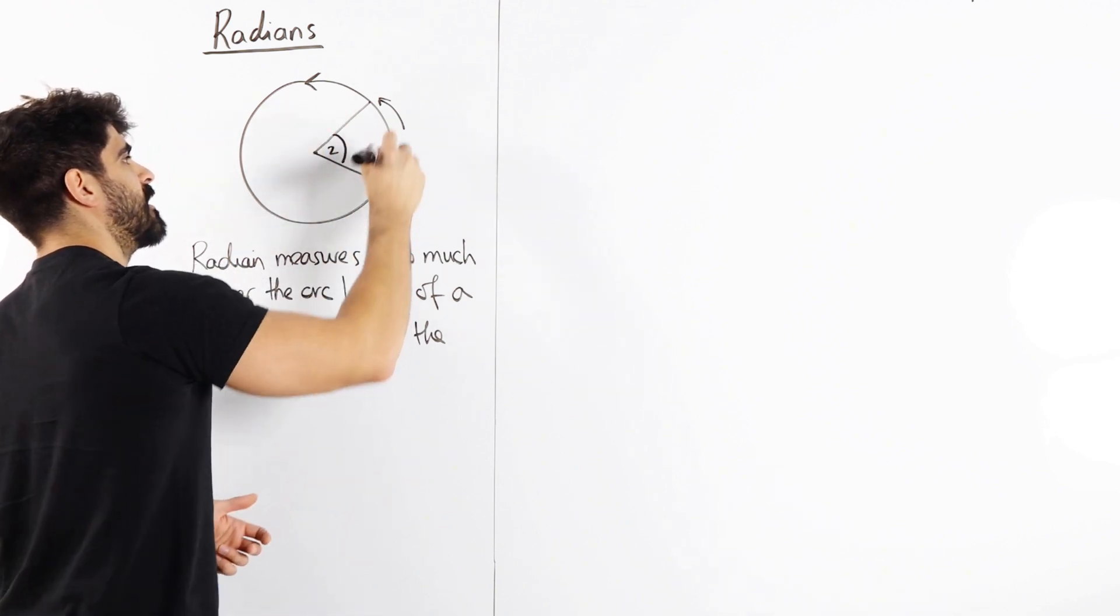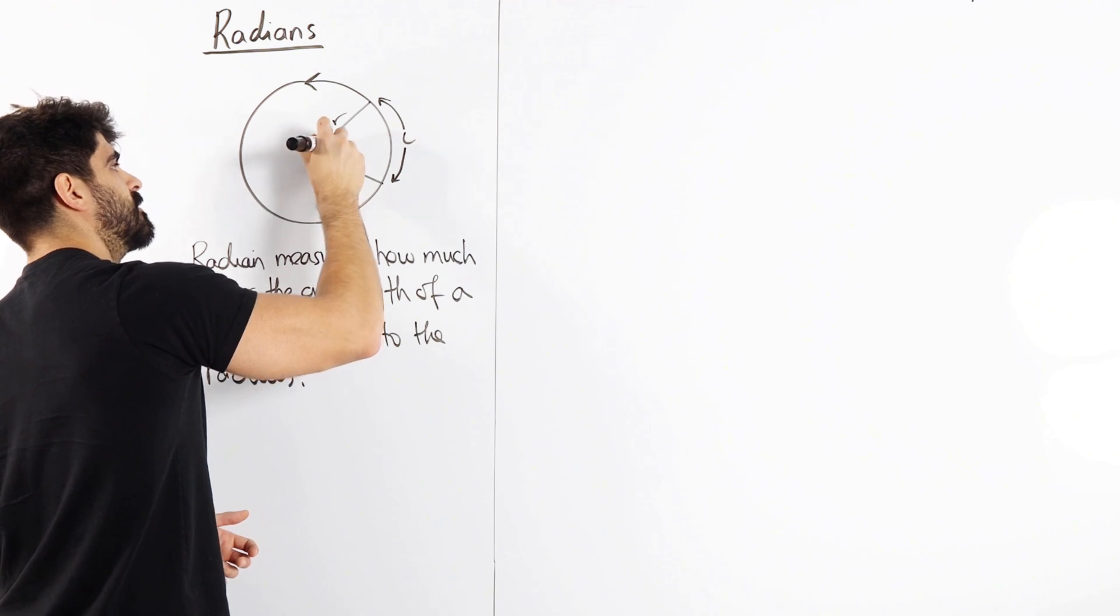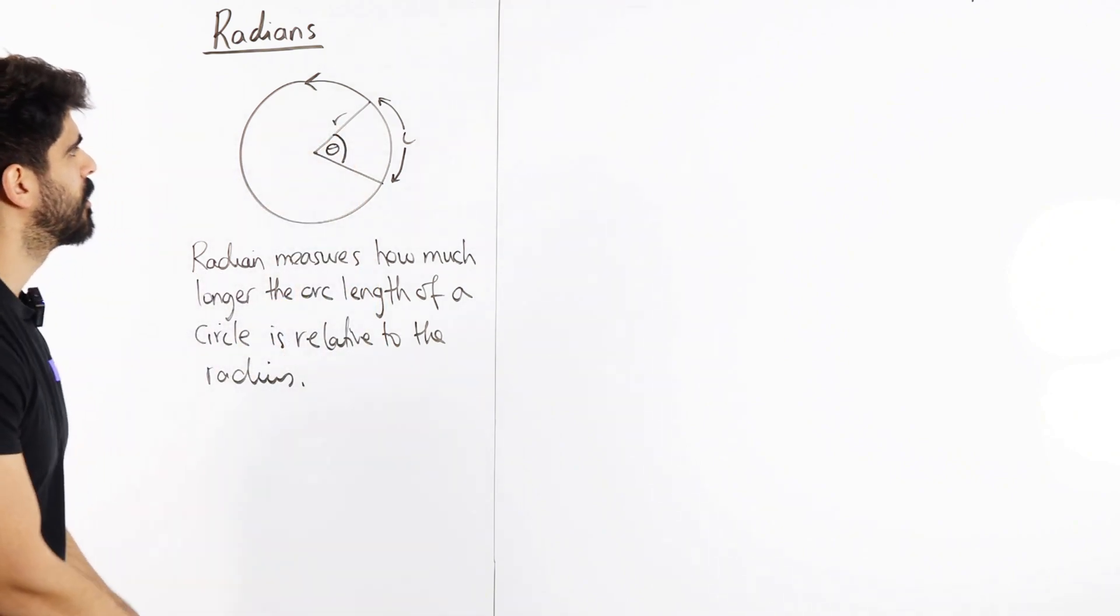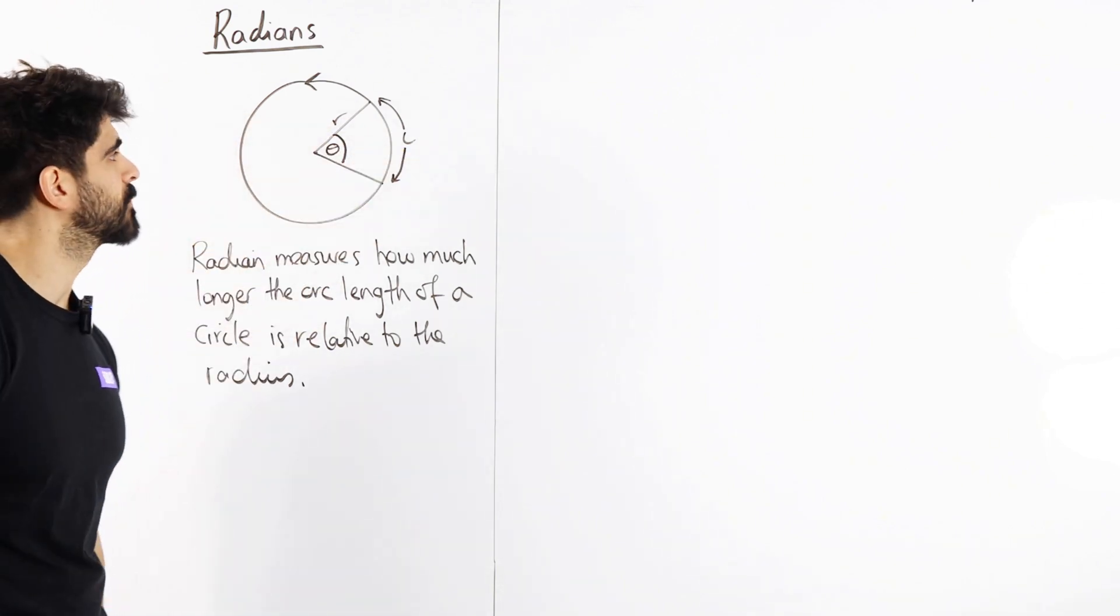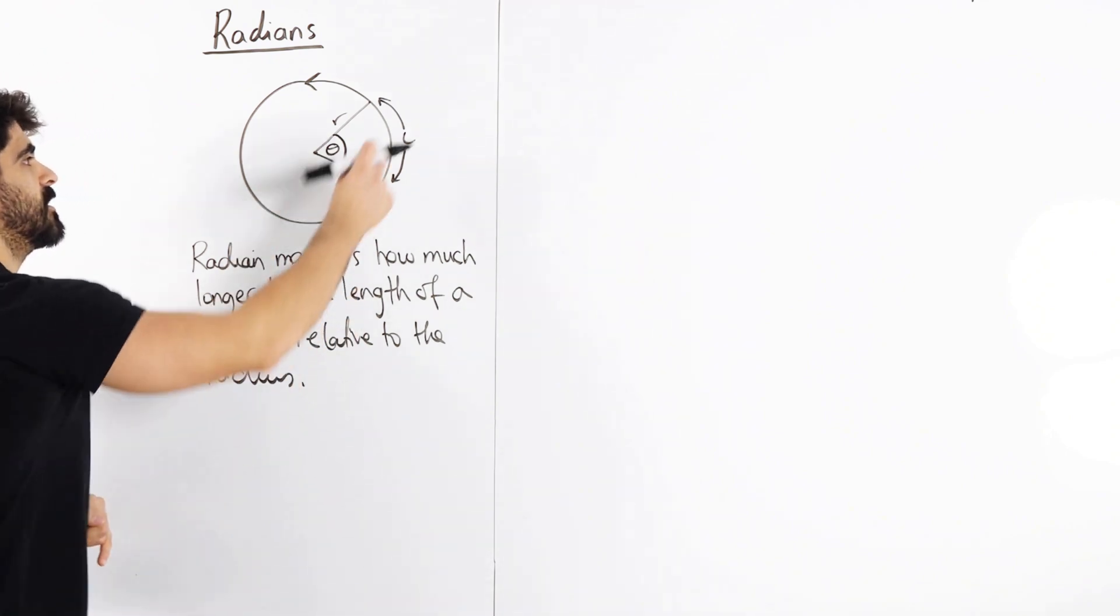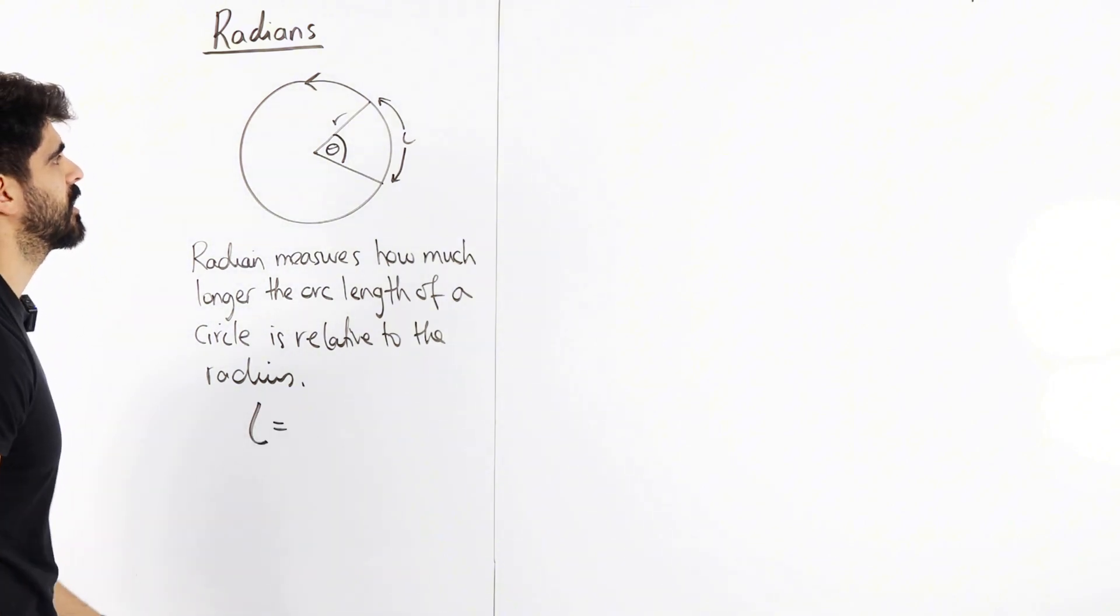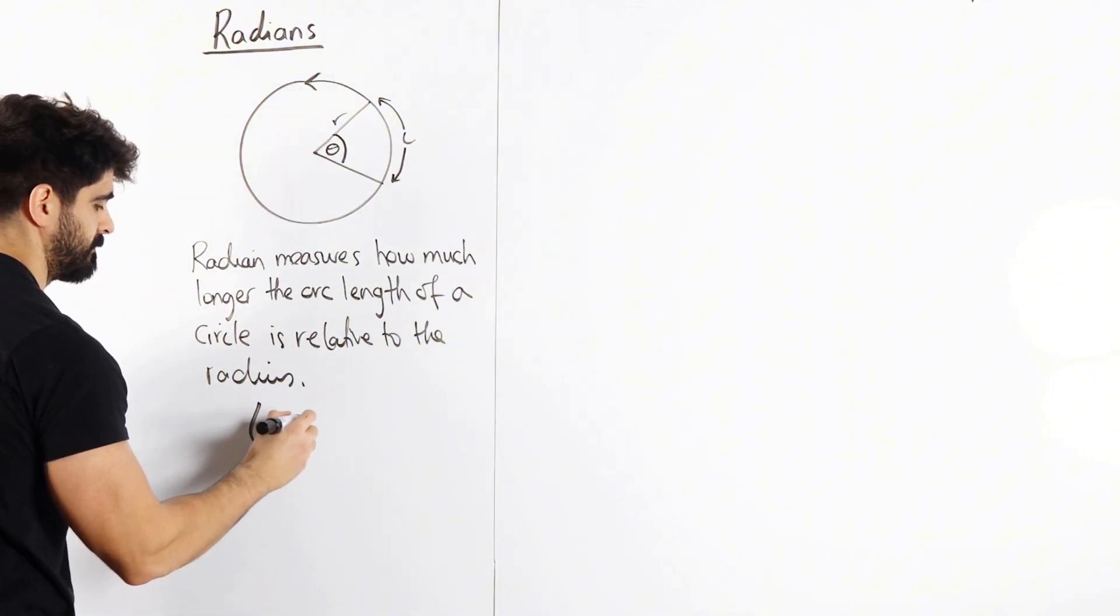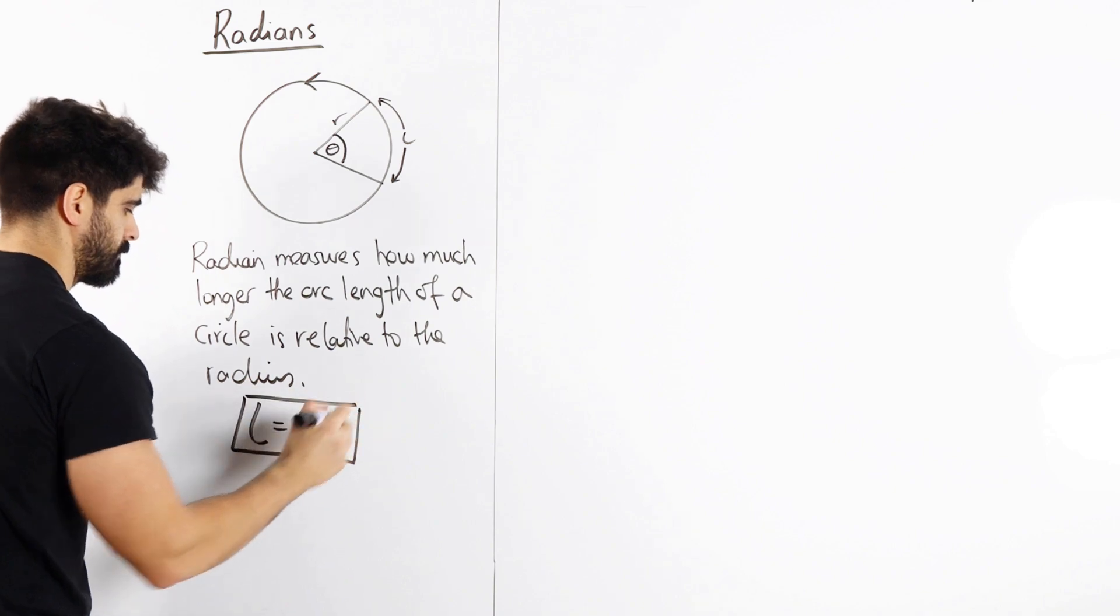So let's go back to the original definition then. If I call this L, this is my radius and I call this angle theta, what we're saying is this times this is this. Simple. And this is our first definition when it comes to radians. The arc length of a circle is just r theta.